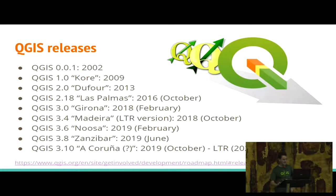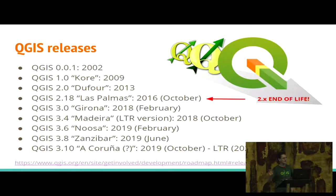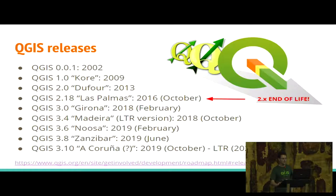Looking at our releases, I'd like to mention that there is a version end-of-life policy. QGIS 2.x is receiving no bug fixes anymore, so if you're still on 2.x, please try to move relatively quickly. We also don't know when it might stop working with a new operating system, since it uses an older version of Qt. That's another reason to move to QGIS 3.x. Version 3.4 is the current LTR and 3.10 will be next.